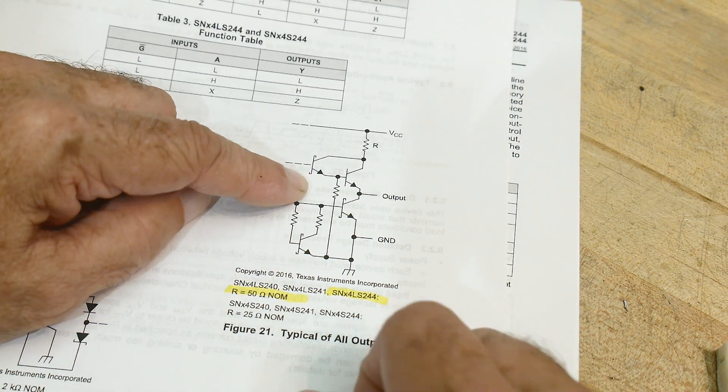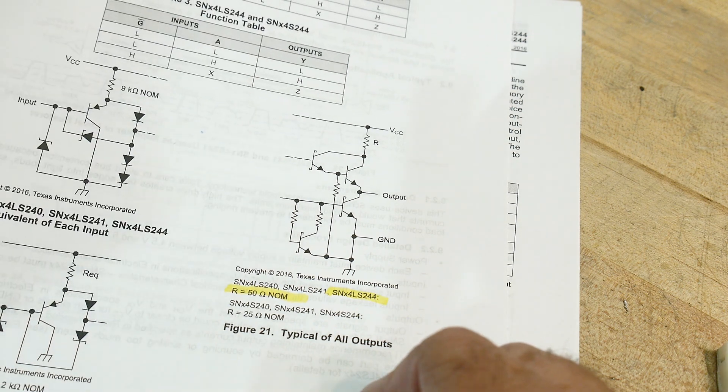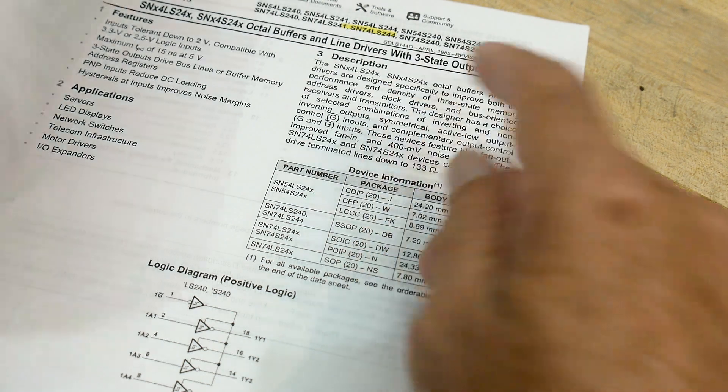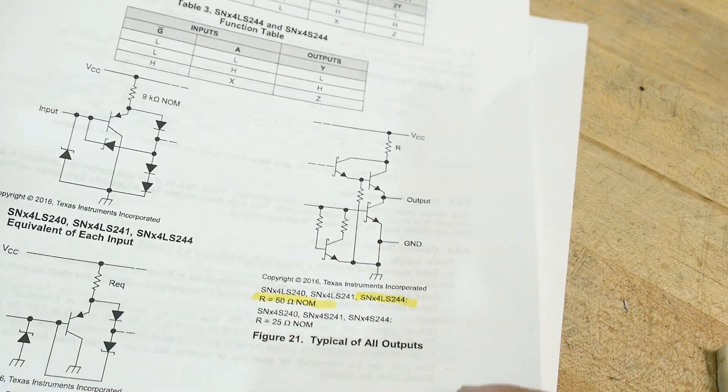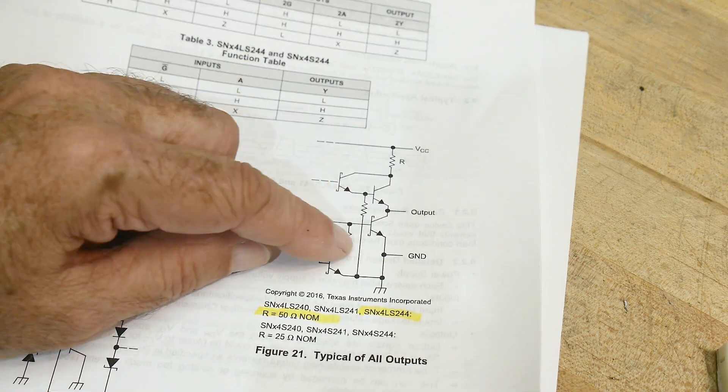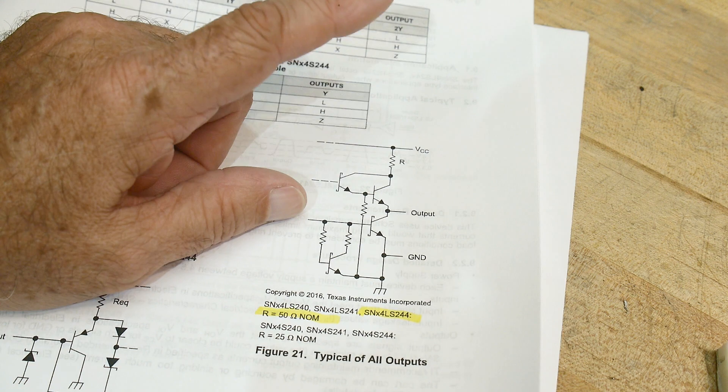The other thing that we can look at here on this schematic is these are line drivers. So, most TTL parts don't drive high very well. They drive low well, but they don't drive high very well. This one will drive high as well.